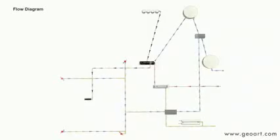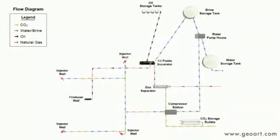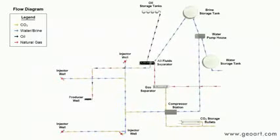This flow diagram demonstrates how the CO2 flood cycle works. The reservoir, surface facilities, and wells make up a closed-loop system where virtually all the CO2 is retained in the project.